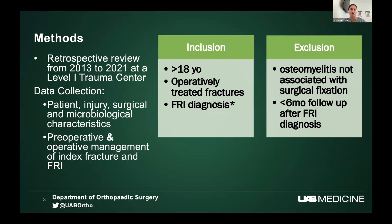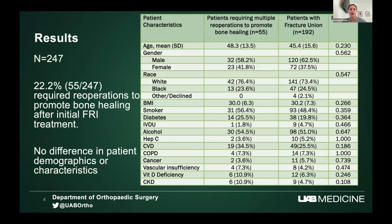We looked at injury, surgical, and microbiological characteristics as well as intraoperative and postoperative management. After our review, we found 247 patients included in this study, of which 55 — or 22.2 percent — required more operations to promote bone healing, meaning their fracture did not go to union after initial treatment for the fracture-related infection.